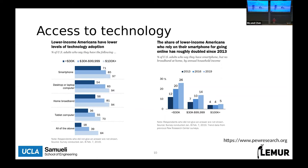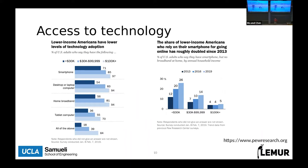The separation between the haves and have-nots is not only in terms of money and wealth but specifically technology. However you look at it, you need resources, you need wealth, you need money to have technology — whether that's hardware, services, or access to broadband and connectivity.